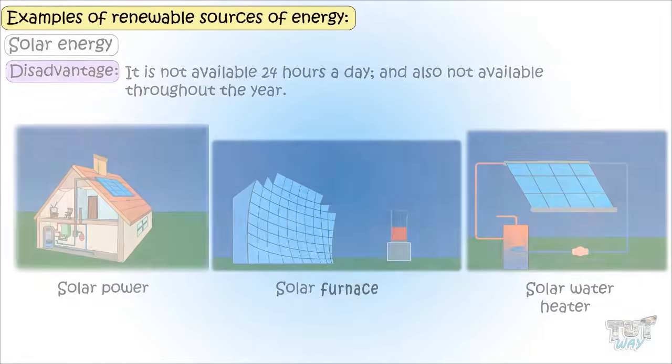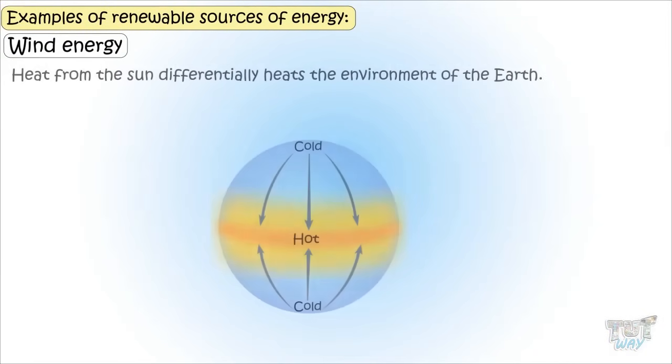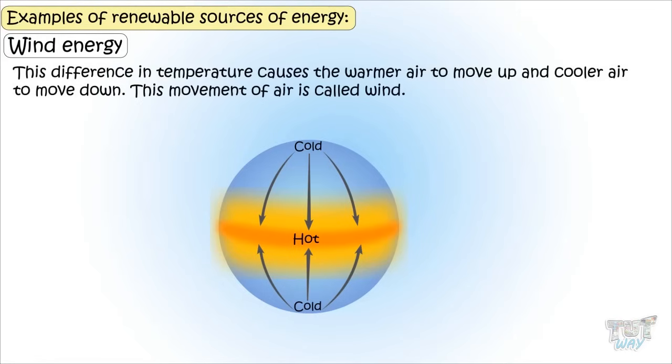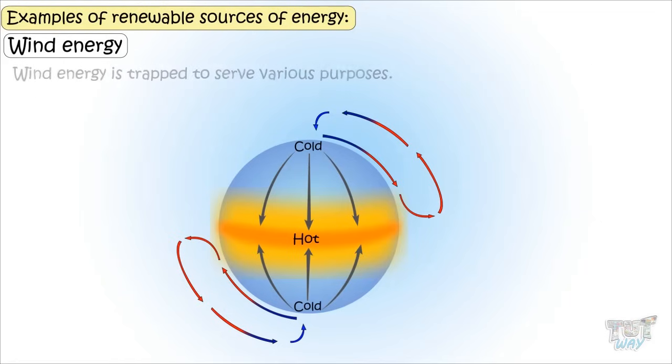Now let's learn wind energy. Heat from the sun differentially heats the environment of the Earth. The Earth's atmosphere and Earth's surface are unevenly heated. There are different temperatures at different places on Earth, and this difference in temperature causes warmer air to move up and cooler air to move down. And this moving of air is called wind.